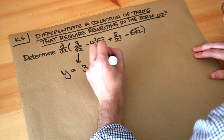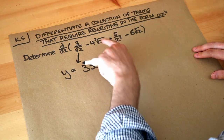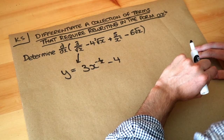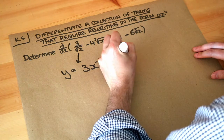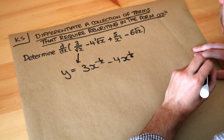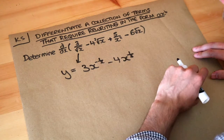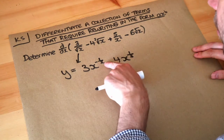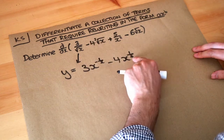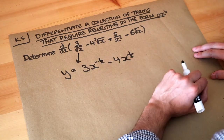The next term is minus 4 times the cube root of X. The cube root of X is the same as X to the power of a third. So remember: when you have roots you're going to have fractional powers. If it's a square root it's a power of a half; if it's a cube root it's a power of a third; if it's the fourth root it's a power of a quarter, and so on.